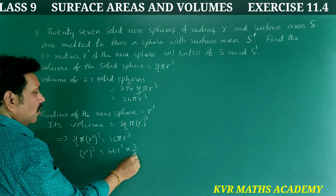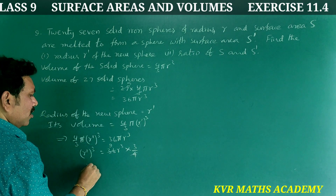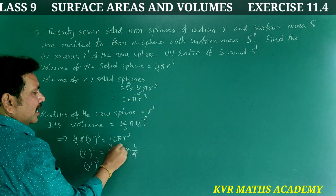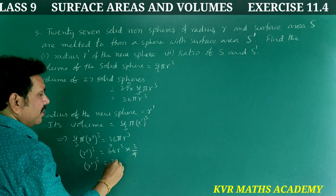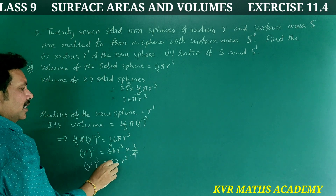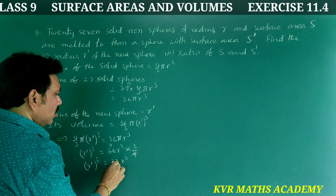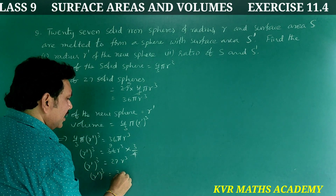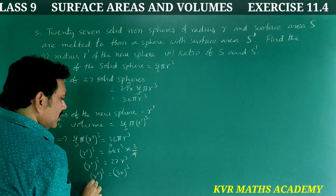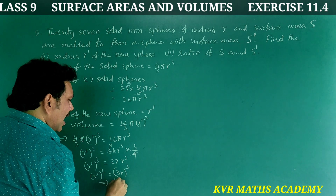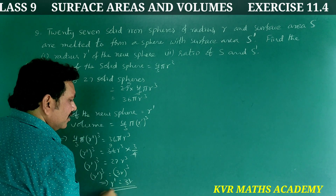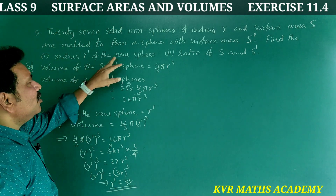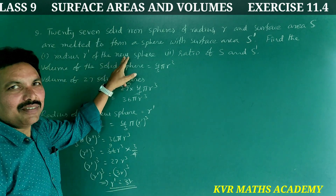4 nines are 36, so r dash cube equals 27 r cube. Therefore r dash equals 3r. The radius of the new sphere is 3r.